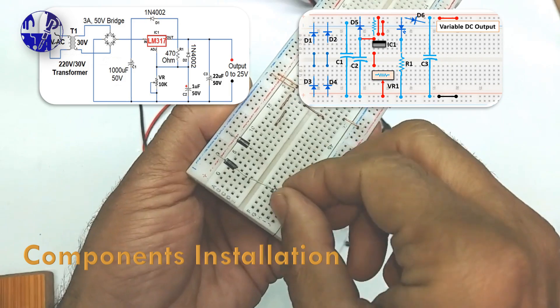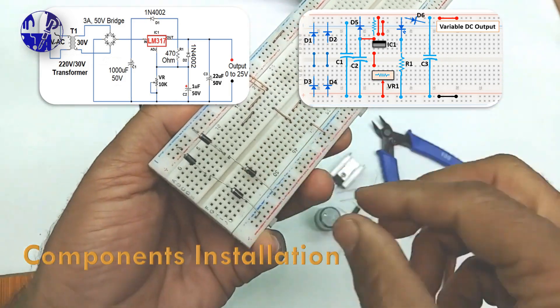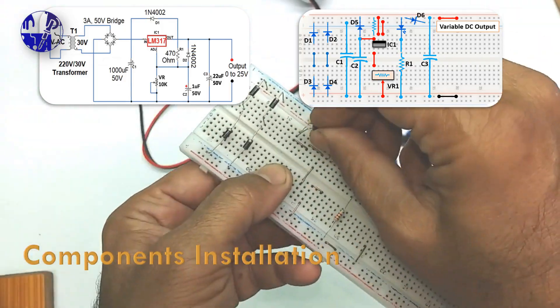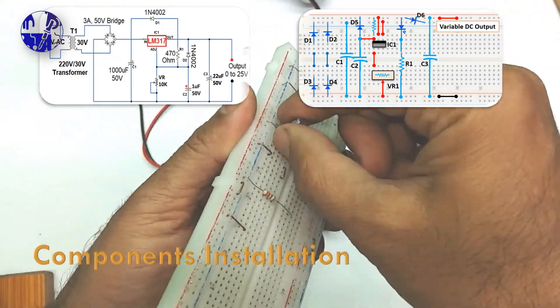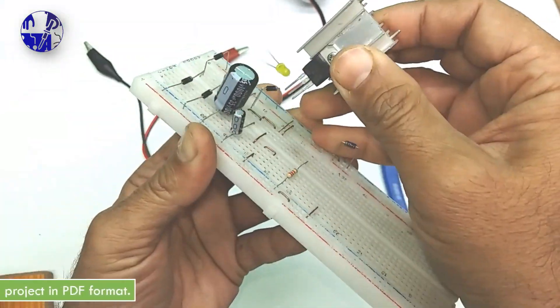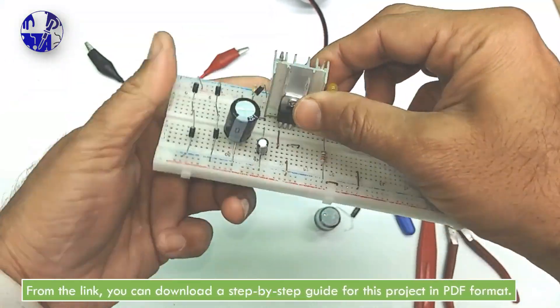Follow the circuit diagram displayed on the screen and install all components along with the jumper wires on the breadboard. You can download the image of the circuit diagram from the link in the description.